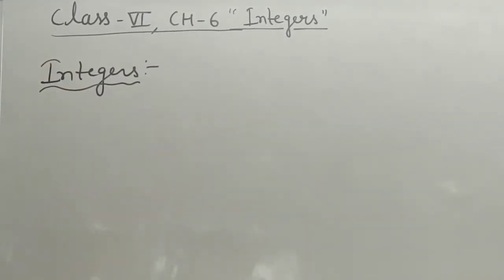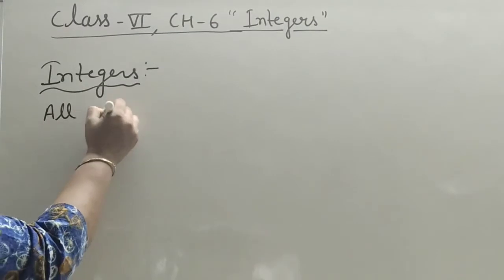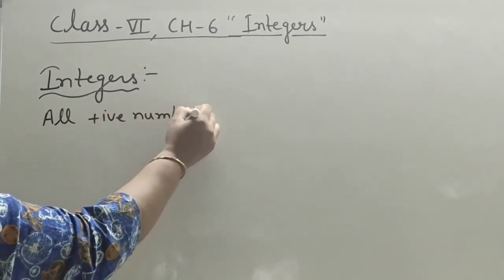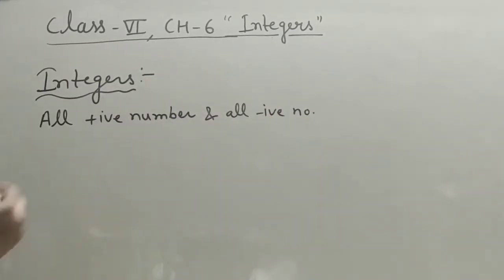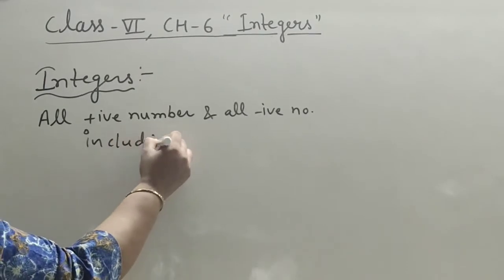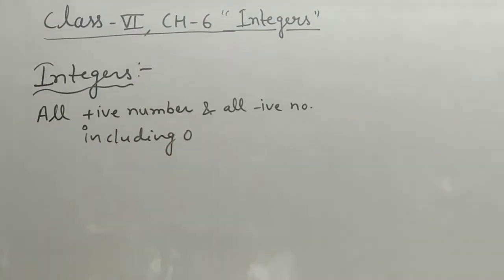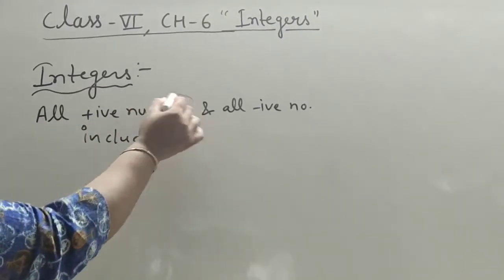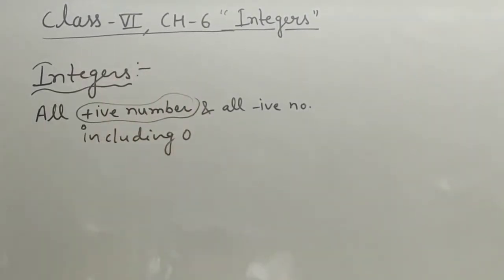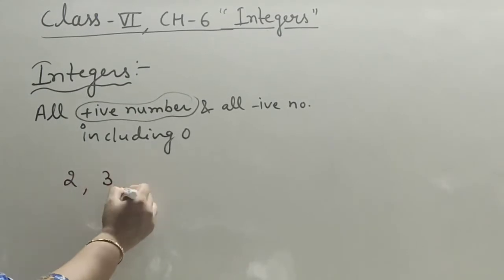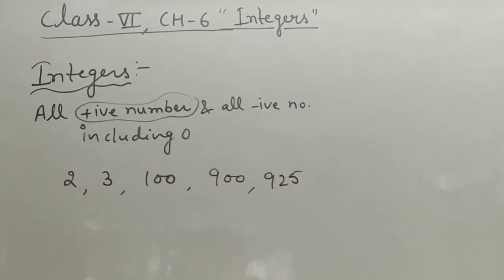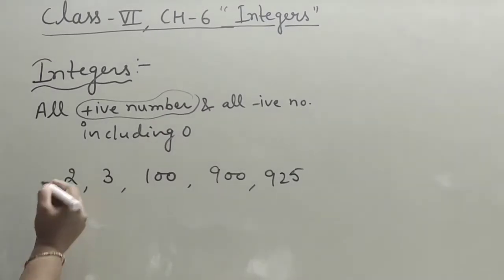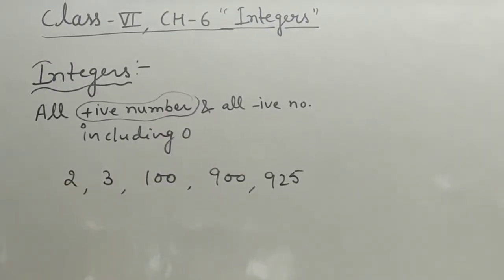The first definition: integers are all positive numbers and all negative numbers including 0, and are called integers. Positive numbers are like 2, 3, 100, 900, or 925. These are positive numbers.